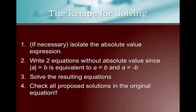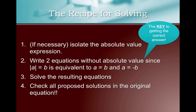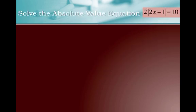All right, and then lastly, check all proposed solutions in the original equation. All right, again, the key to getting these right is going to be step two, which is writing two equations, not just the positive one, but writing a equals b, and a equals negative b.